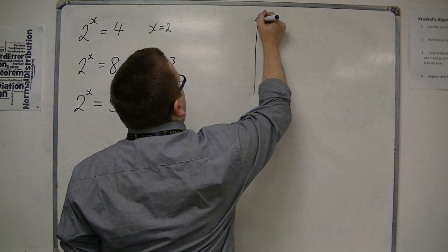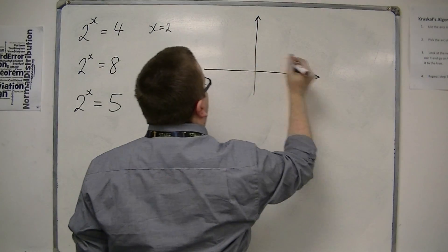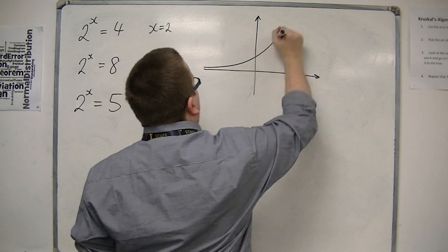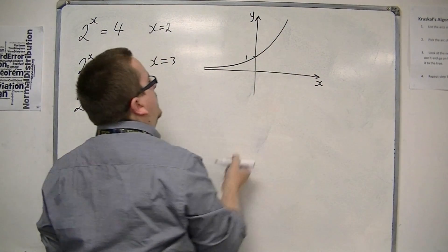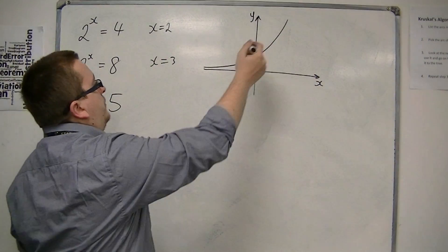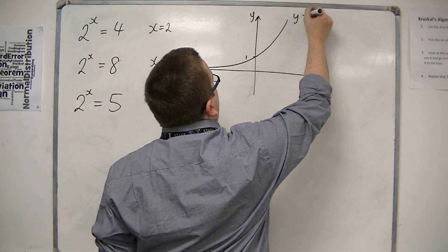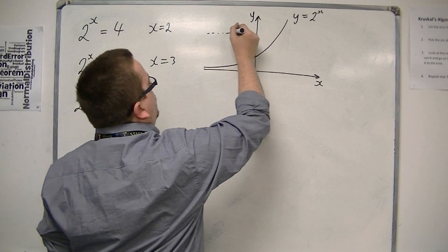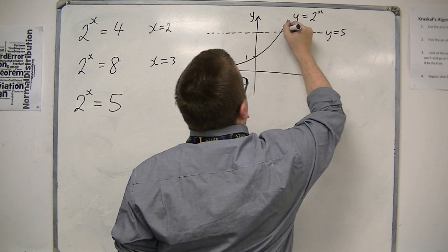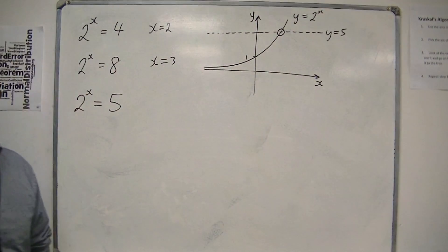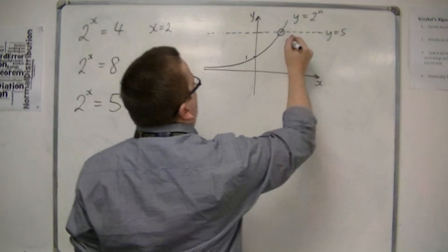Let's look at the graph of y equals 2 to the x, which we now know how to sketch. Going through 1 on the y-axis, that is y is equal to 2 to the x, and the line y equals 5 is this line here. So we're trying to find this intersection point, the x-coordinate of it.